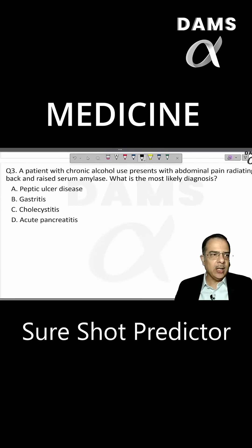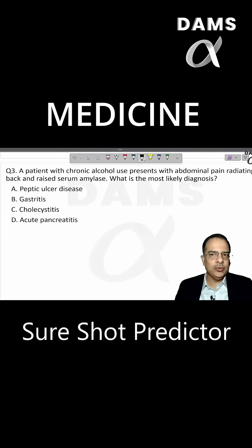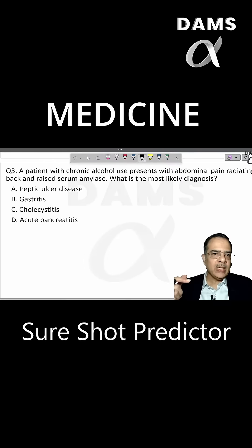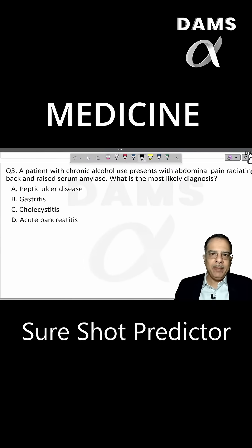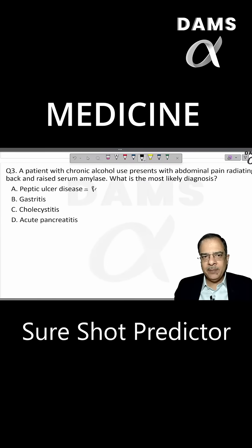Give me the answer for question number three. This is a patient who is having chronic alcohol use, abdominal pain, and that pain radiates to the back, with raised serum amylase. What is the most likely diagnosis? Peptic ulcer disease is characterized by pain, and if there is bleeding, melena will be present.